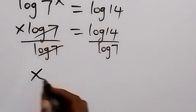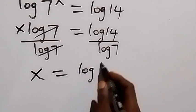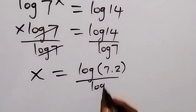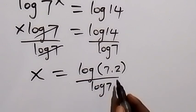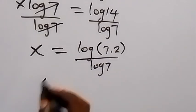x equals log 14 over log 7. Log 14 can be expressed as log(7·2), then over log 7. We can separate log(7·2) in the form x equals (log 7 plus log 2) all divided by log 7.